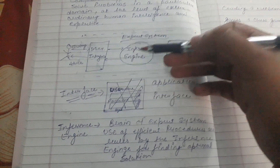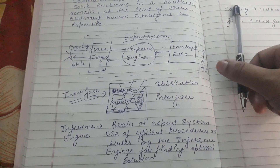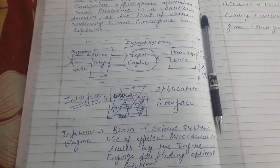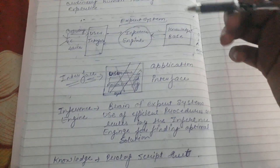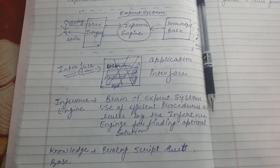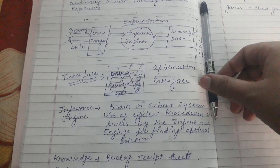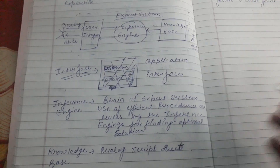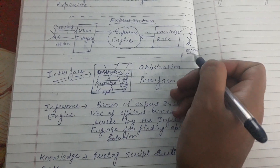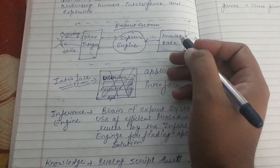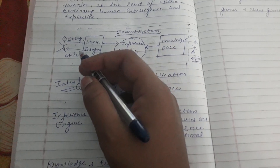The inference engine follows strategies for finding the solution from the knowledge base. Whenever anyone uses Prolog, there are two screens: first is the output screen and second is the script screen. That script screen is known as the knowledge base, where all the experts put the data into the knowledge base. These solutions are then given to the user directly via the inference engine.